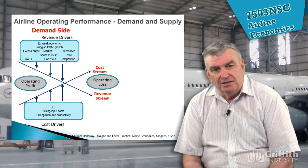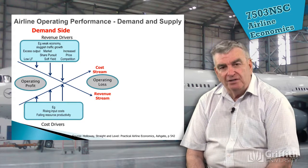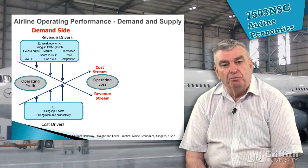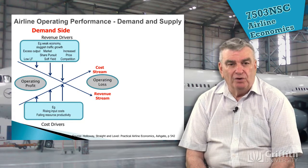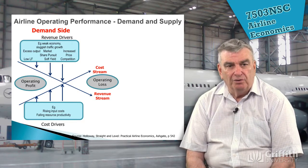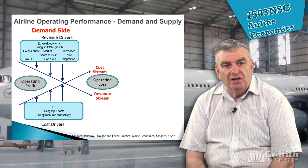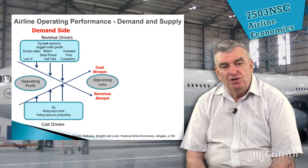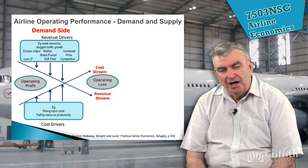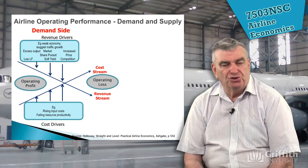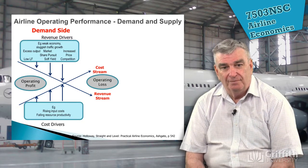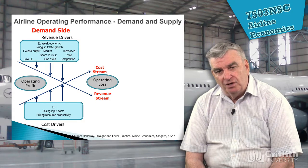Looking at airline operating performance and going back to lecture two, we spoke about supply and demand. Using the diagram from Holloway's book 'Straight and Level: Practical Airline Economics,' we find the revenue drivers on the demand side. These can include a weak economy, sluggish growth, excess output — such as we saw in Australia — increased prices, and market share pursuit. All of these can produce a low load factor, a soft yield, and increased price competition — as we saw between Qantas and Virgin Australia — causing a downward impact on the revenue stream.